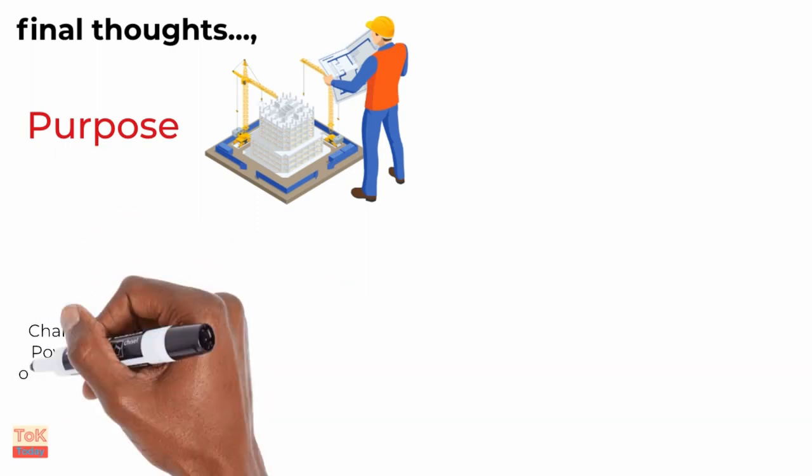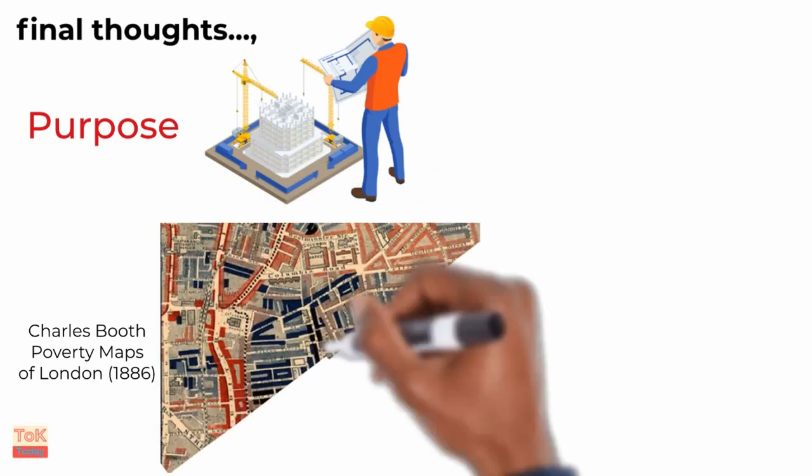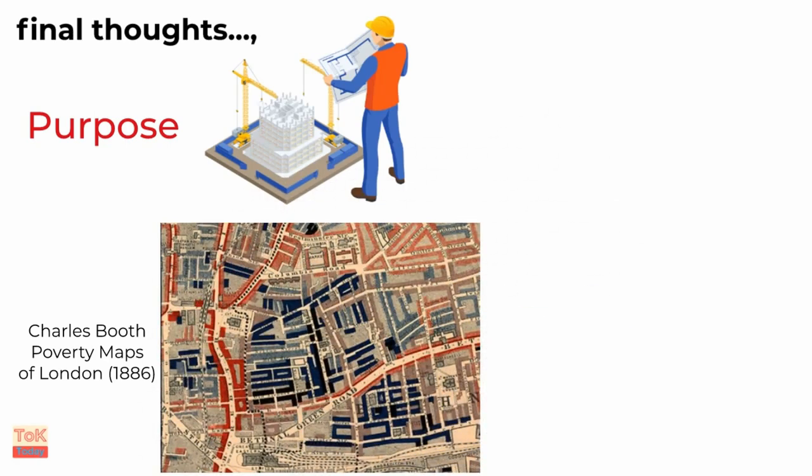At which point, I'd like to put in a particular mention for the wonderful maps of London, which were made by Charles Booth in 1886. Check them out if you don't know them, particularly if you're doing sociology or geography.